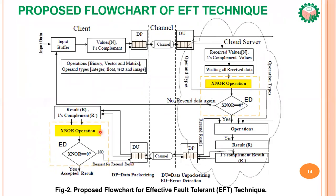The proposed process for effective fault tolerance technique: the client takes the input data value, its ones complement, operations, and operation types. The data and its ones complement are packetized and sent through the channel. The server receives the packets, unpacketizes them, and waits for all packets. When all packets are received, XNOR operation detects any errors on data. If an error is found, the client is requested to resend the data. There are key operations: binary vector or matrix operations. After completing the operation, the result and its ones complement are packetized and sent through the channel.